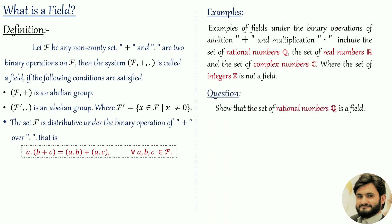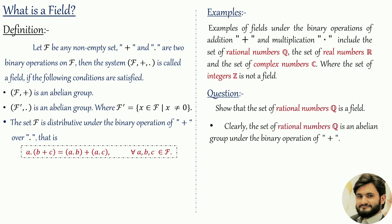Question: Show that the set of rational numbers Q is a field. To show Q is a field, we need to check three conditions: first, whether Q is an abelian group under addition; second, whether Q excluding the additive identity (zero) is an abelian group under multiplication; and third, whether the distributive law holds.